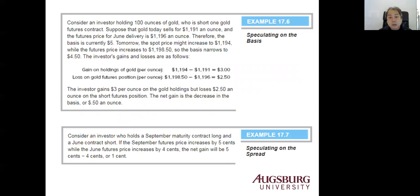You can speculate on the basis. Consider an investor holding 100 ounces of gold who is short one gold futures contract — one contract equals 100 ounces. Suppose gold sells today for $1,191 per ounce and the futures price for June delivery is $1,196 per ounce, so the basis is currently $5. Tomorrow, the spot price might increase to $1,194 and the futures price increases to $1,198.50, so the basis narrows to $4.50.